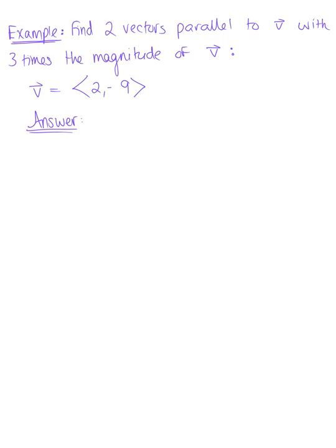Find two vectors parallel to V with three times the magnitude of vector V. Here we are given that vector V is defined by the components 2, negative 9.